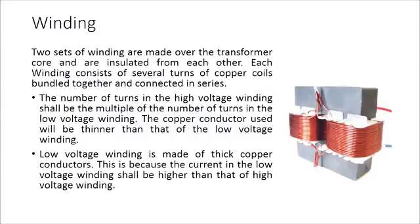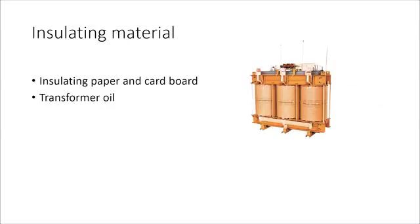Two sets of windings are made over the transformer core and are insulated from each other. Each winding consists of several turns of copper coils bundled together and connected in series. The number of turns in the high voltage winding shall be a multiple of the number of turns in the low voltage winding. The copper conductor in the high voltage winding will be thinner, while the low voltage winding is made of thick copper conductors, because the current in the low voltage winding is higher. Insulating paper and cardboard are used to isolate the primary and secondary windings from each other and from the transformer core.